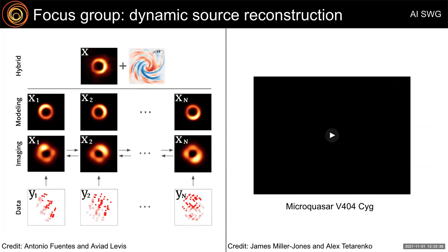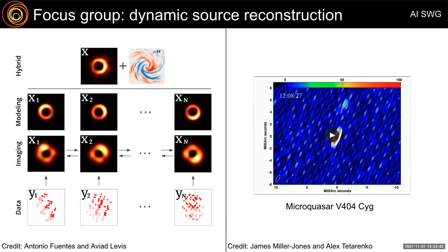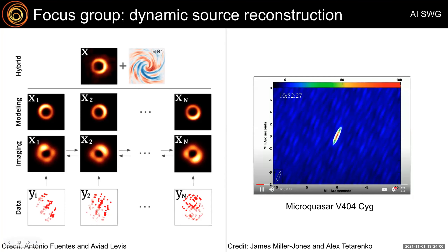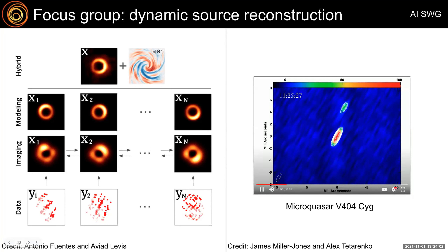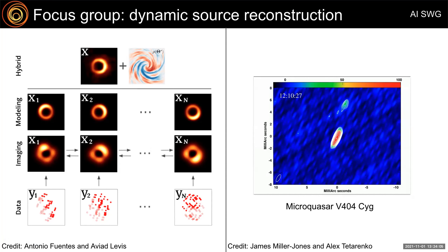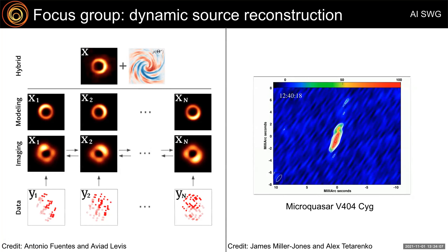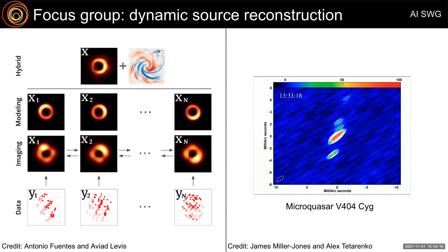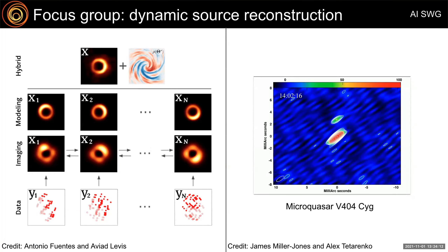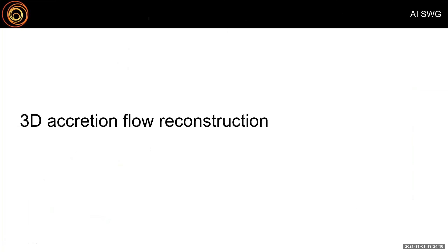On the left are three different versions of how a dynamic reconstruction algorithm might work: using either parameterized modeling, non-parametric imaging, or a combined approach that parameterizes a portion of the information, like a flow field. On the right is a dynamic reconstruction — a real one — of one of these microquasars, V404 Cygni, courtesy of James Miller-Jones and Alex Tanarenko. As you can see, one of these objects is really evolving on minute timescales.